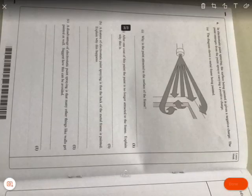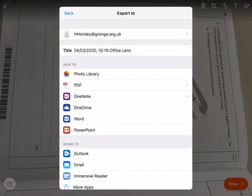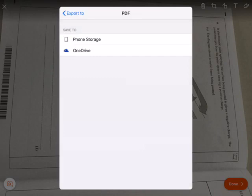And once you're done, press done, and then look at where you want to save it to. It works best if you save to PDF and then save it either phone storage or OneDrive, but from there you can then upload to Firefly.